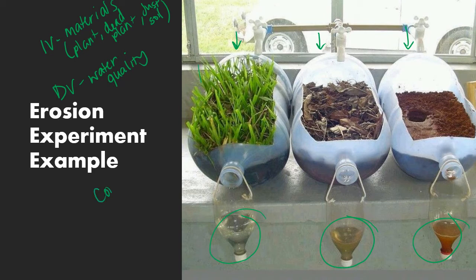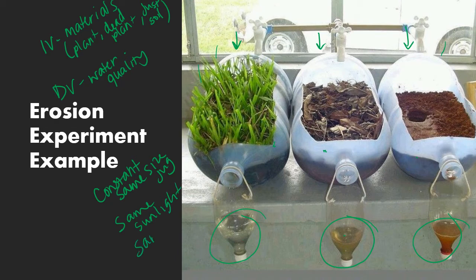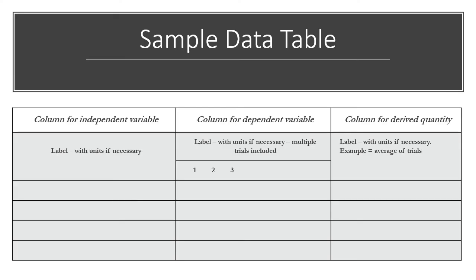So our constants would be, if you're looking at these things, you can see that they are the same size jug. They are sitting in front of the same window. So they're getting the same amount of sunlight. And it would appear as though they're also receiving the same water. Now we could say that just the bare soil is a control, but not real sure what exactly their experiment was.